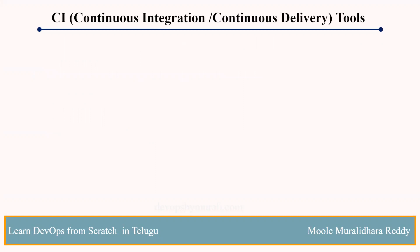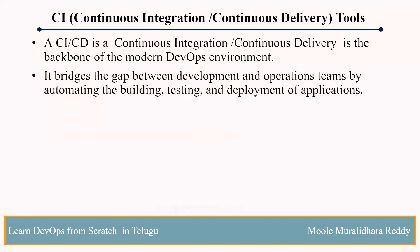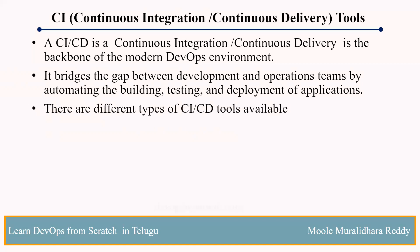Next is continuous integration and delivery tools. Using CI/CD tools, we can automatically build, automatically push, automatically test, and automatically deploy. The main CI/CD tools are Jenkins, Bamboo, and TeamCity. The majority of companies and projects use Jenkins, so we will focus on Jenkins in this course.